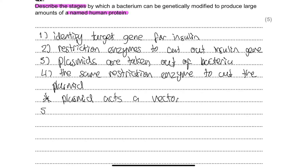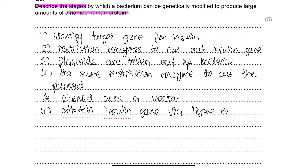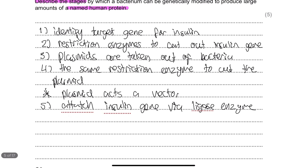The final part is how we actually add the insulin gene into the plasmid. We attach the insulin gene using the ligase enzyme — think of ligase as glue. It sticks the gene into the plasmid so we have a plasmid with the correct gene, ready to produce large amounts of the insulin protein. After this, the insulin is mass-produced by the bacteria.